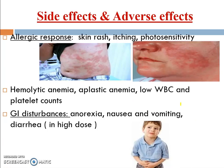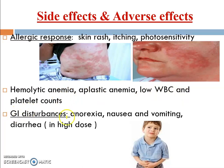Side effects and adverse reactions: allergic responses including skin rash, itching, and photosensitivity are important reactions. Hemolytic anemia, aplastic anemia, low WBC, and low platelet count can occur. GI disturbances like anorexia, nausea, vomiting, and diarrhea occur at higher doses.